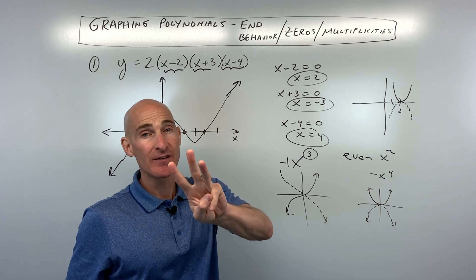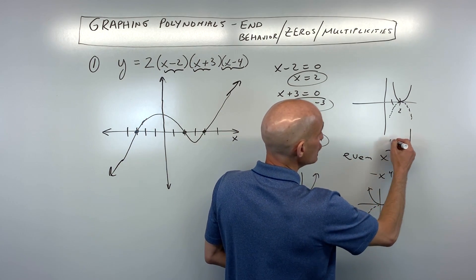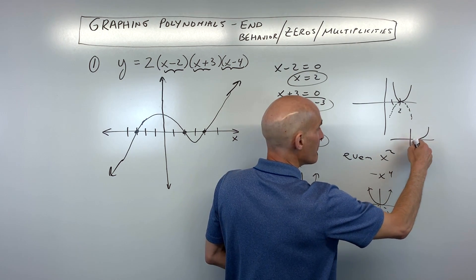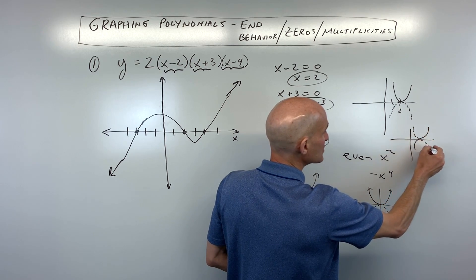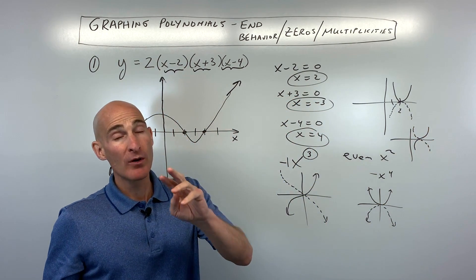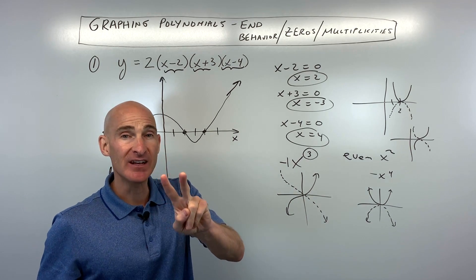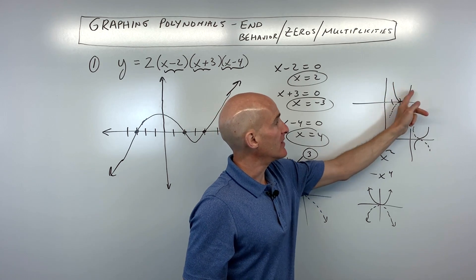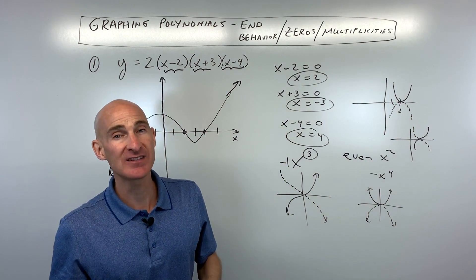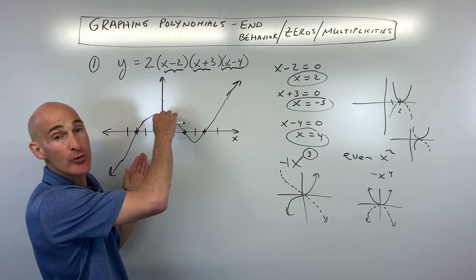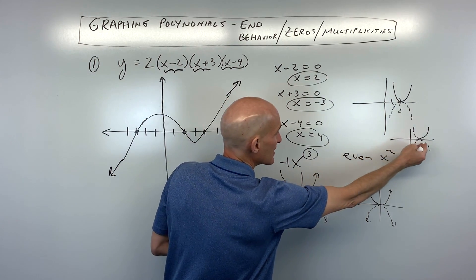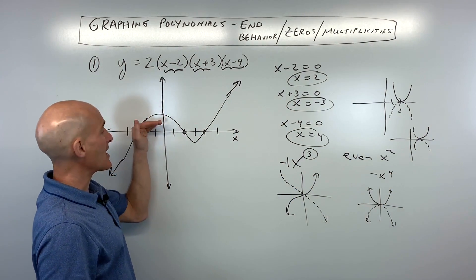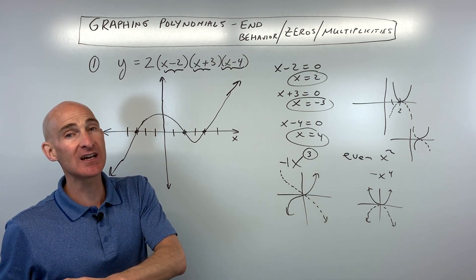If a factor has a multiplicity of 3, the graph has an x-cubed shape as it passes through that point — it almost bounces but ultimately goes through. For even multiplicities, the graph bounces (parabola shape). For odd multiplicities like 1, 3, or 5, the graph passes through. Easy rule: odd goes through, even bounces.